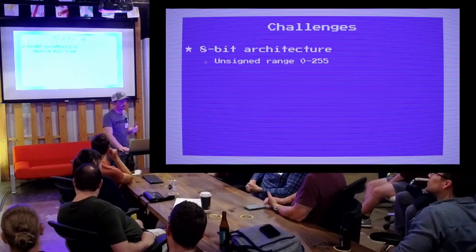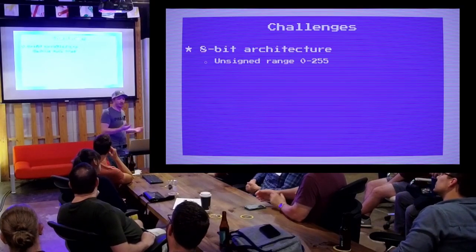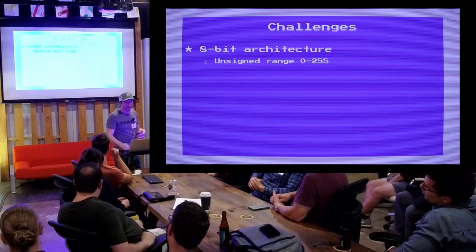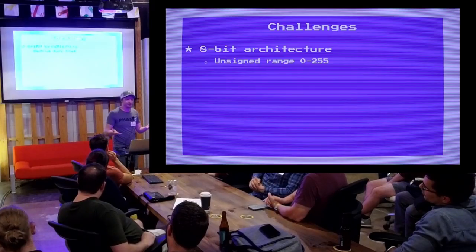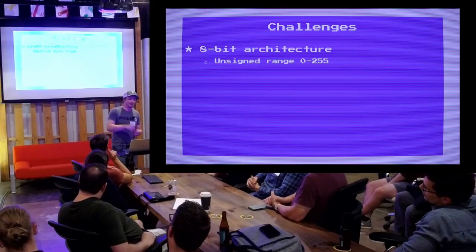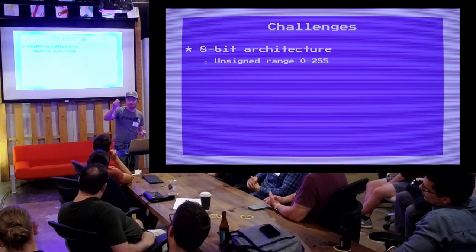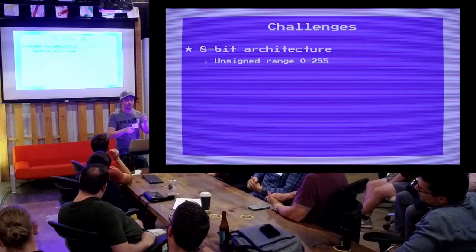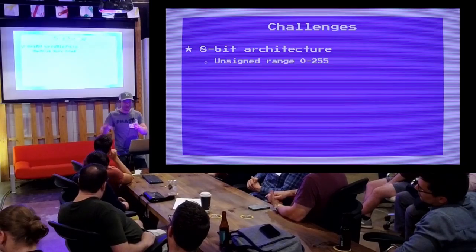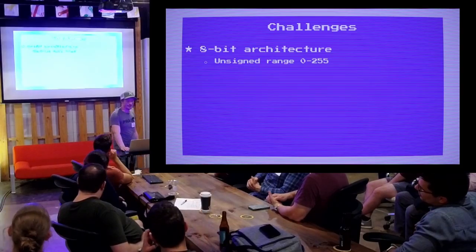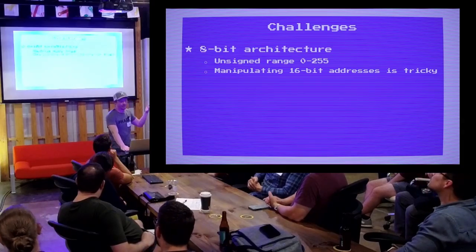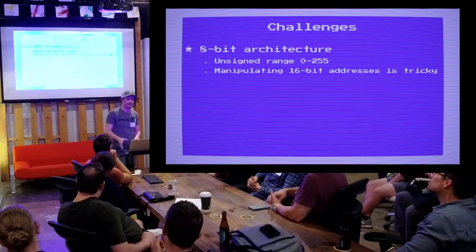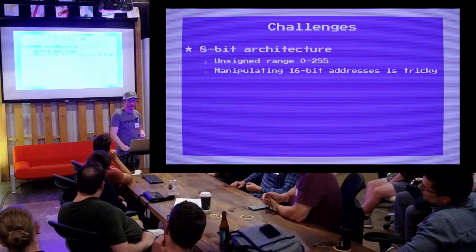Some of the challenges: the 8-bit architecture means you're working with values that have an unsigned range of 0 to 255. The screen itself is a thousand bytes, so as soon as you get past the 255th cell on the screen you have to think about how to do math around the rest of those bytes. Manipulating 16-bit addresses is tricky — you have a 16-bit address space but only 8 bits to work with at a time.